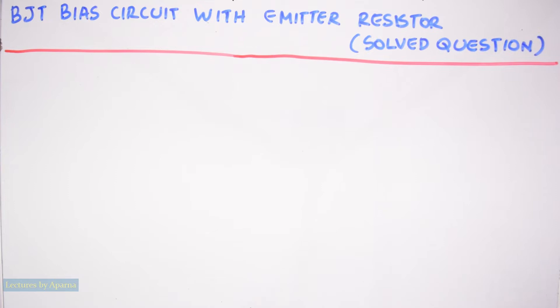Hello everyone, welcome to lectures by Apanna. Today we will discuss a question from a type of biasing given to BJT circuit, that is bias circuit with emitter resistor.